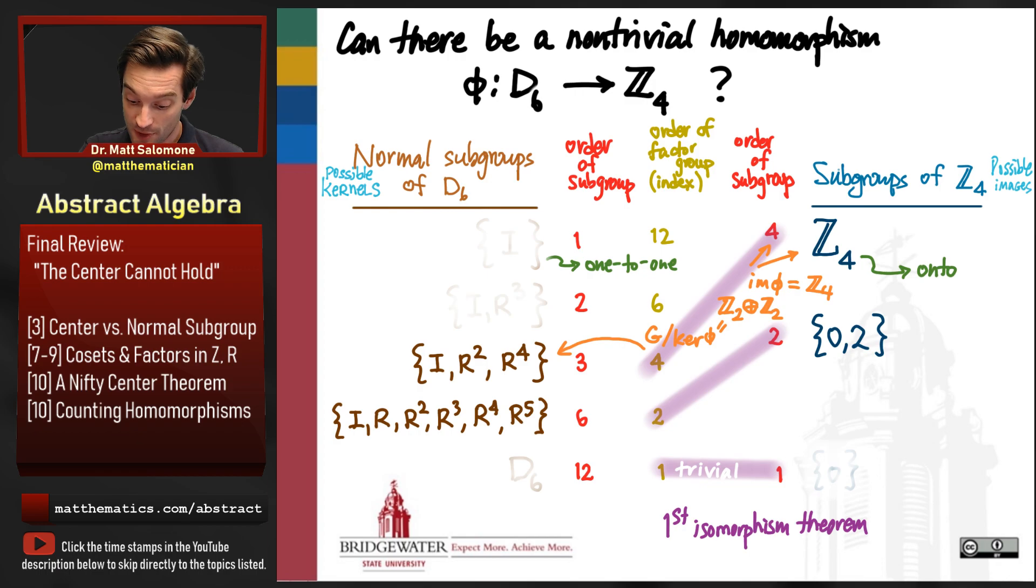So since those would otherwise need to be isomorphic, that's not possible. The first isomorphism theorem says that the factor group has to be isomorphic to the image. But here, if the image is Z4 and the factor group is Z2 direct product Z2, we can't have that. Those two groups are not isomorphic. So we cannot have a non-trivial homomorphism that goes onto Z4 from D6.